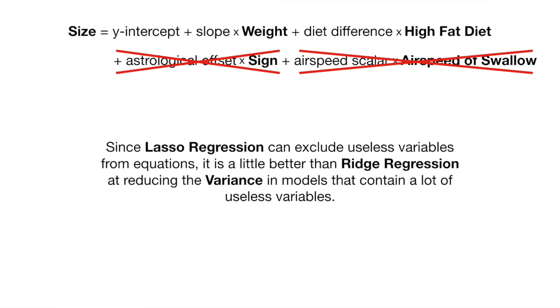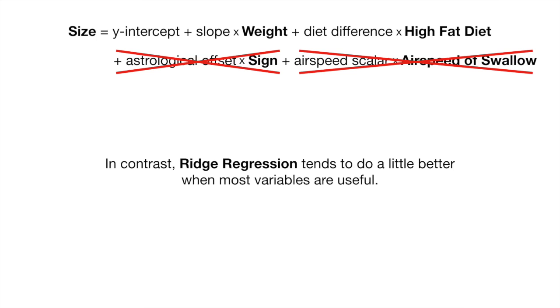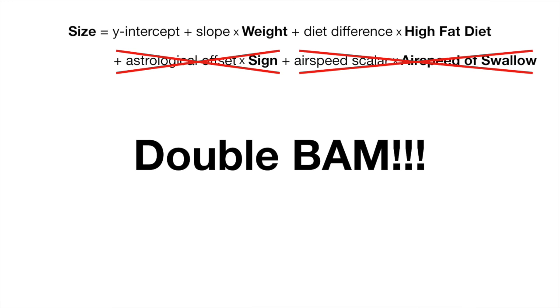Since Lasso Regression can exclude useless variables from equations, it is a little better than Ridge Regression at reducing the variance in models that contain a lot of useless variables. In contrast, Ridge Regression tends to do a little better when most variables are useful. Double bam!